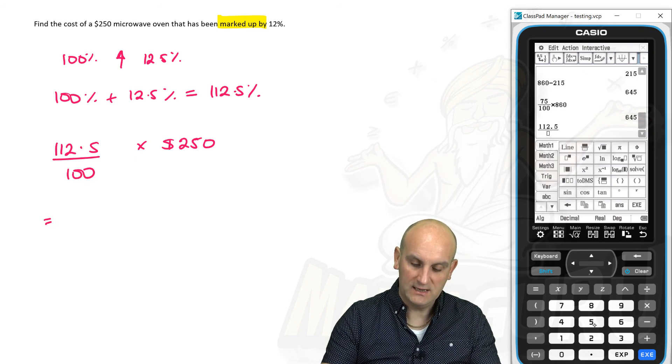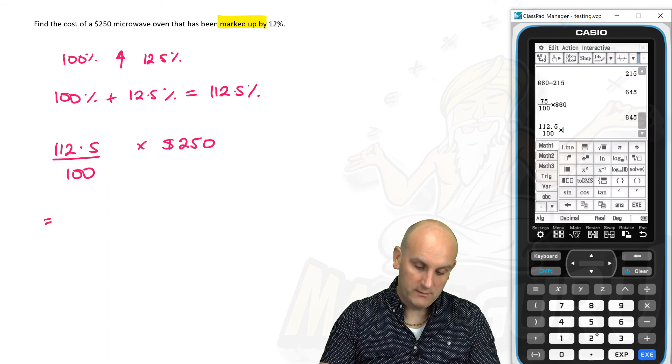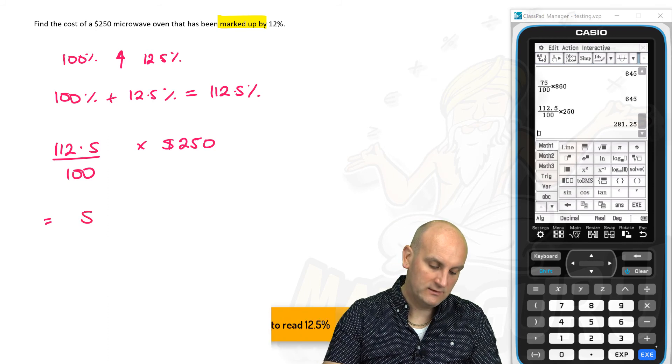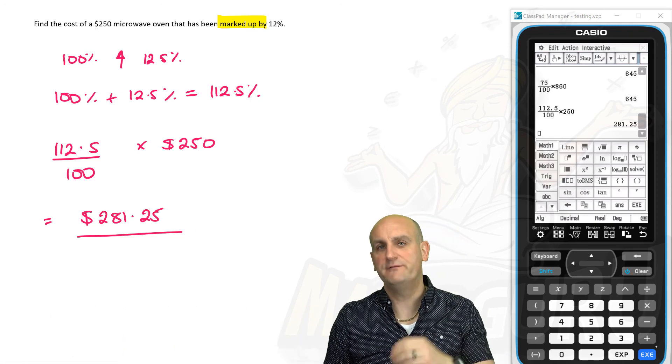Bang there in my calculator. 112.5. Now, obviously, in real life, we're not really allowed to have decimals in fractions. But that's a different video, so we won't worry about that. 250. Hit enter. And there we go. Ladies and gentlemen, my final answer, 281.25. Love this stuff. And it comes up in maths all over the place.